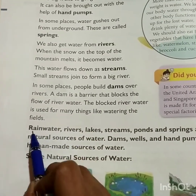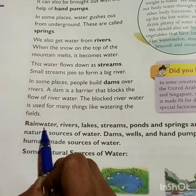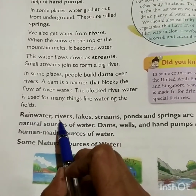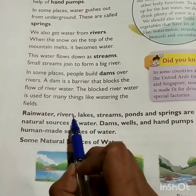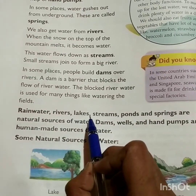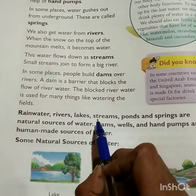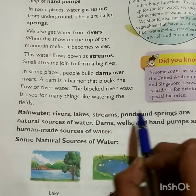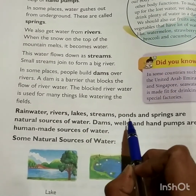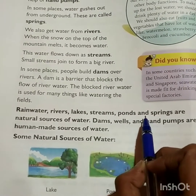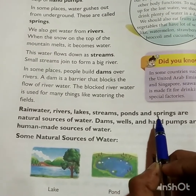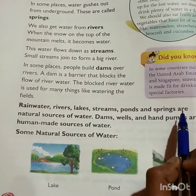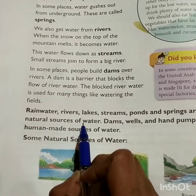Rain water, R-A-I-N-W-A-T-E-R. Rivers, R-I-V-E-R-S. Lakes, L-A-K-E-S. Streams, S-T-R-E-A-M-S. Ponds, P-O-N-D-S. And springs, S-P-R-I-N-G-S — are natural sources of water.